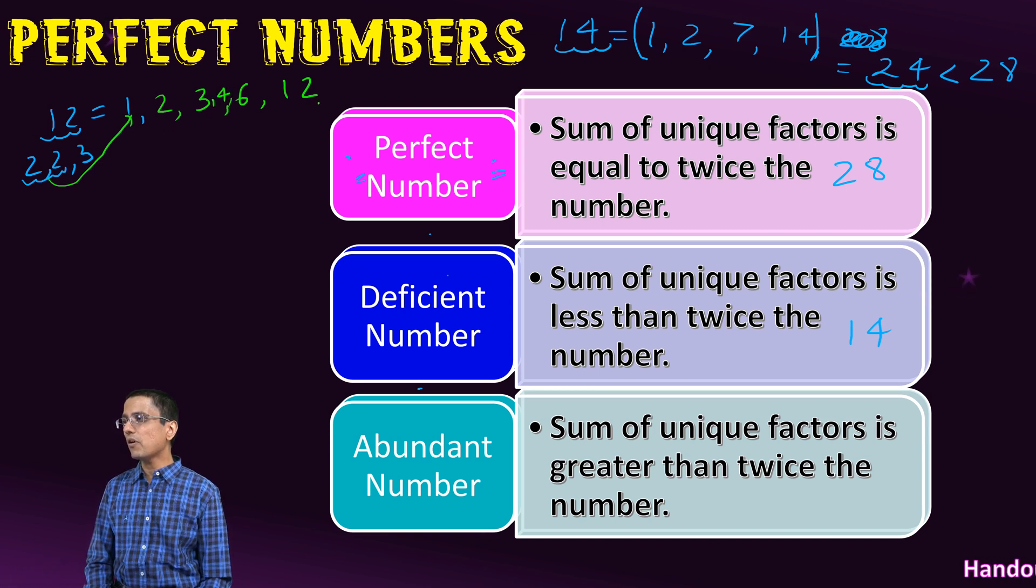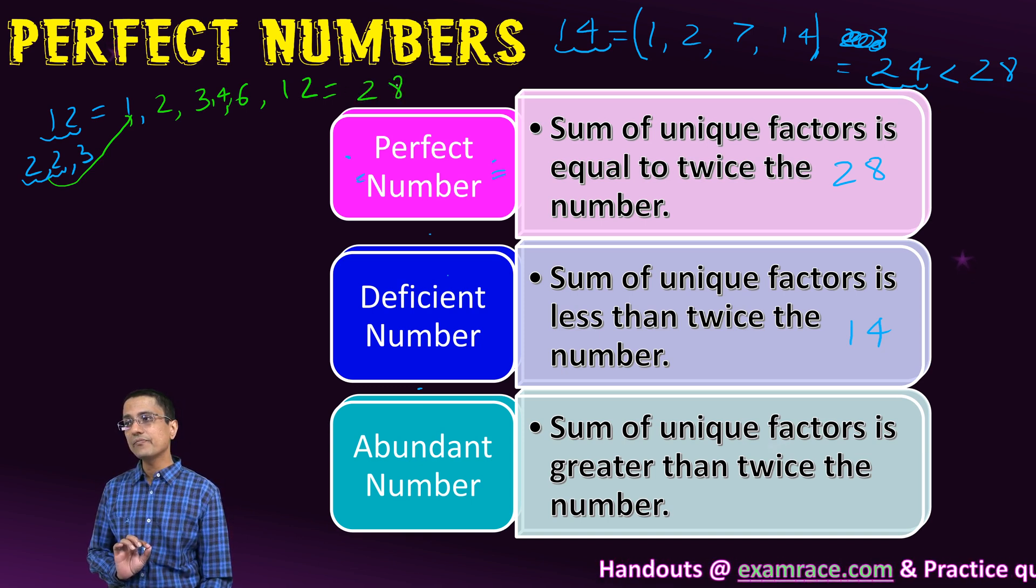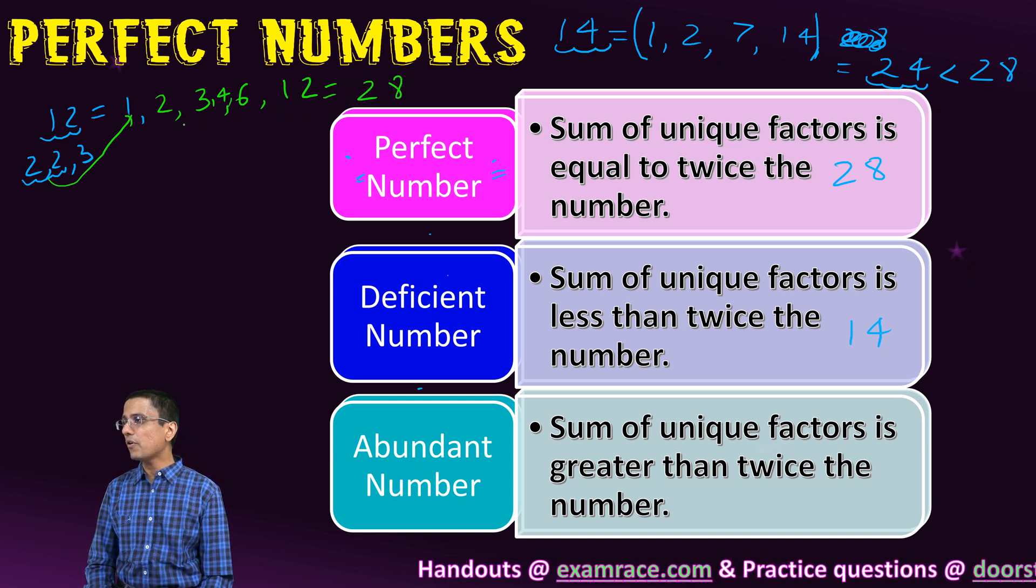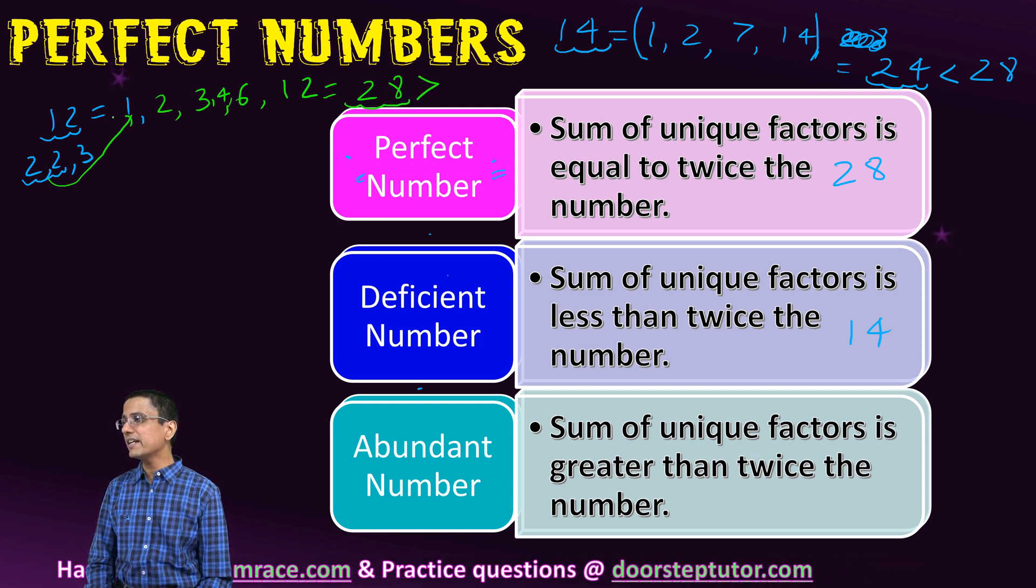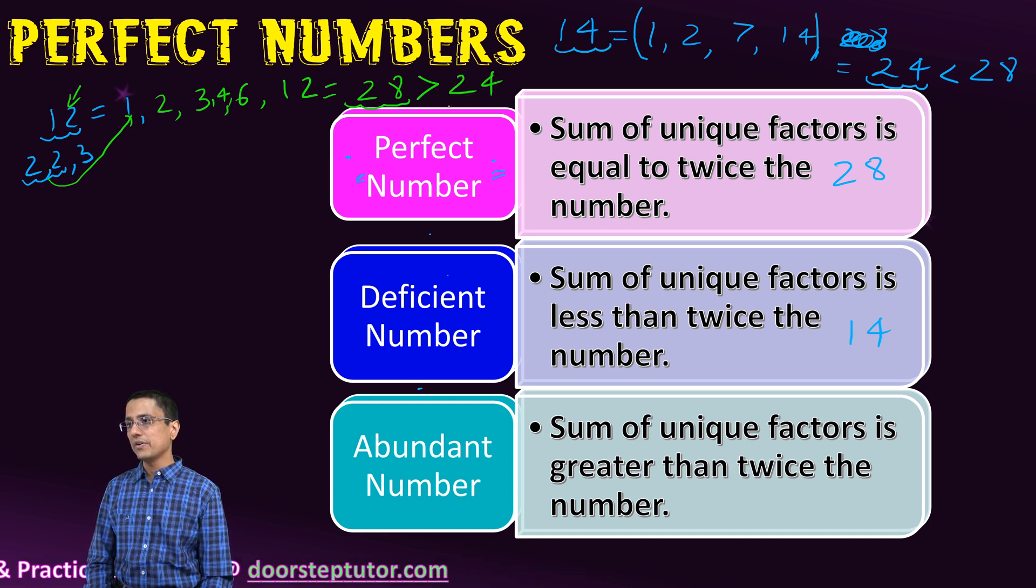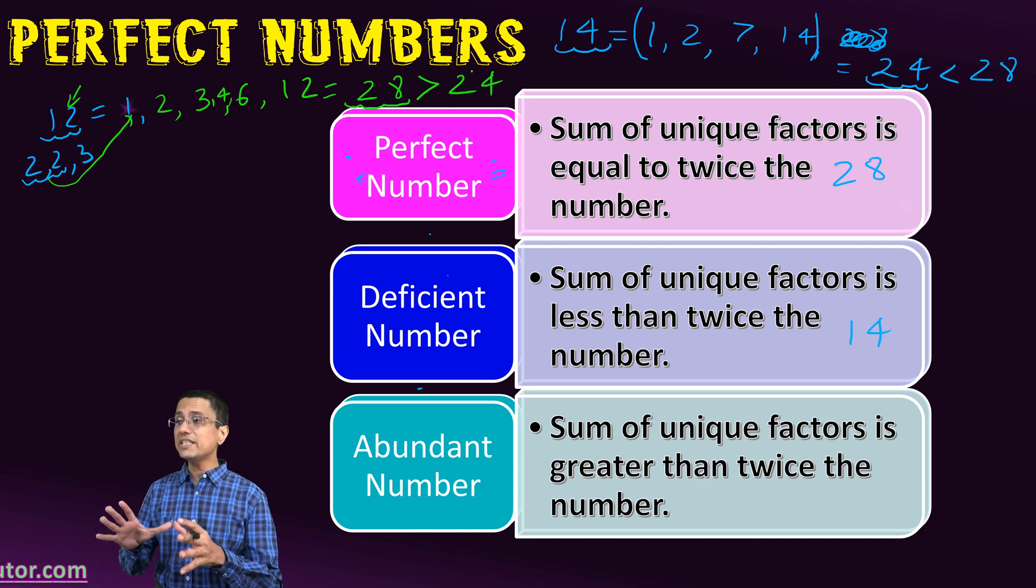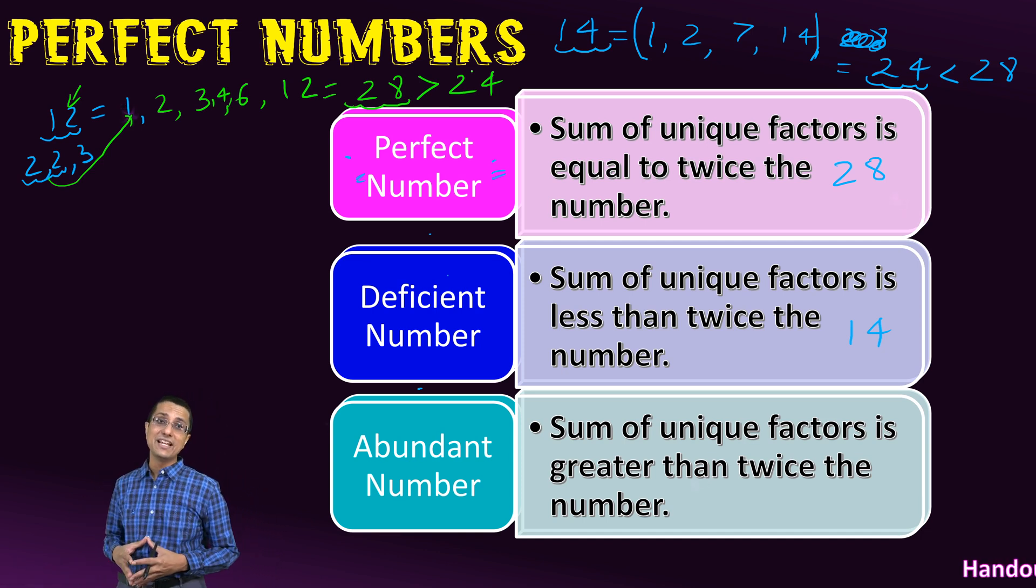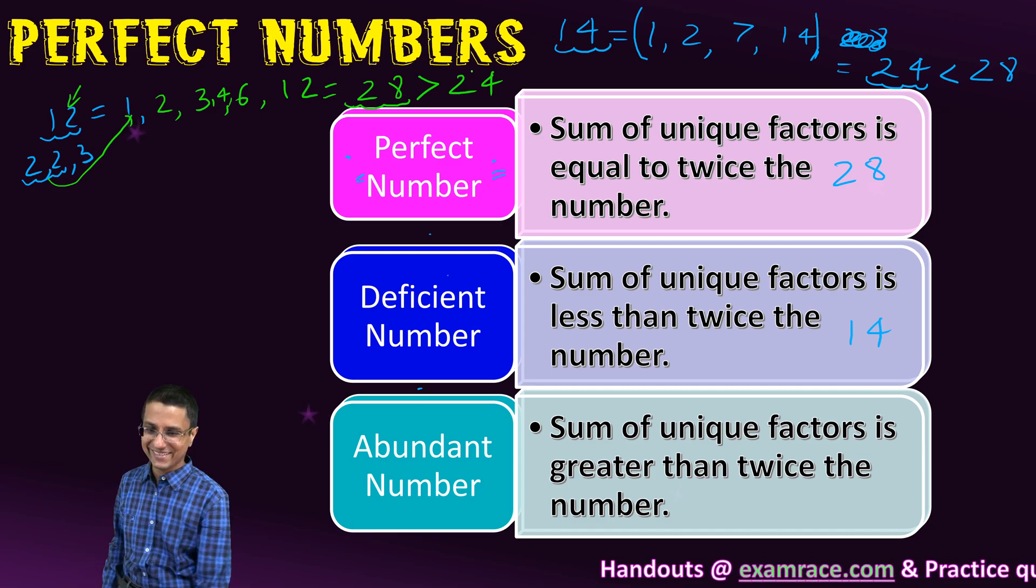If I make a total of all these factors, this comes out to 28. Now this total of all the factors is 28, which is greater than 2 times 12. 2 times 12 is 24, so 28 is greater than 24. Therefore, we say that number 12 is actually an abundant number. A very interesting topic.